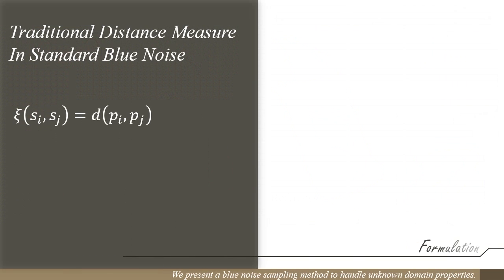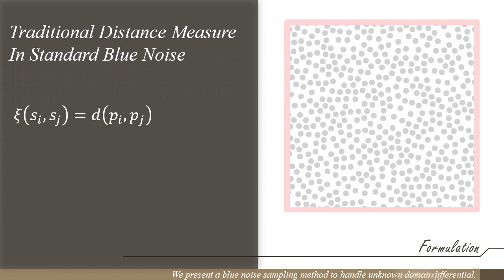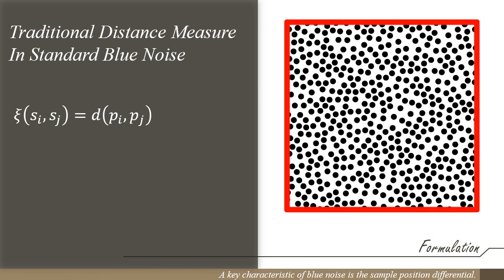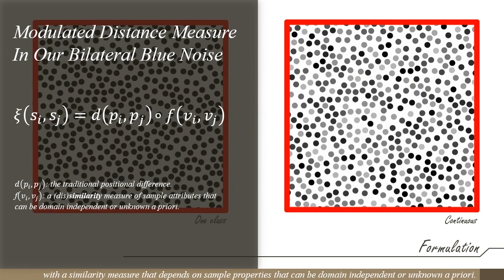We present a blue noise sampling method to handle unknown domain properties. A key characteristic of blue noise is the sample position differential. We modulate the traditional differential, which depends on sample positions only, with a similarity measure that depends on sample properties that can be domain-independent or unknown a priori.